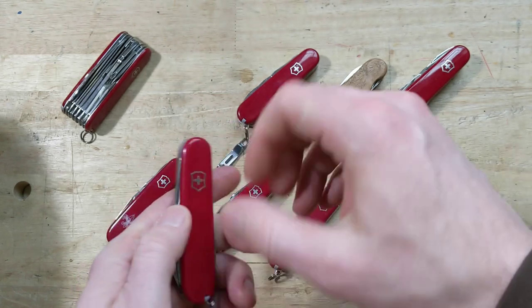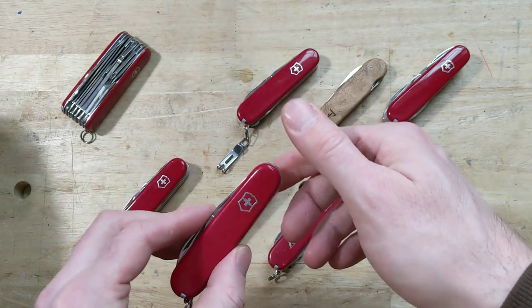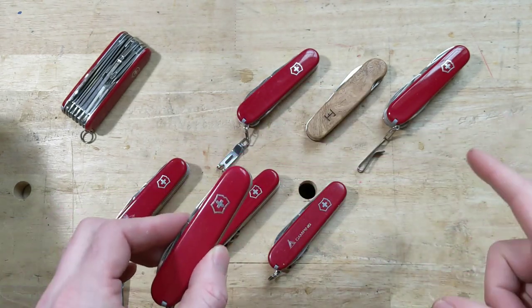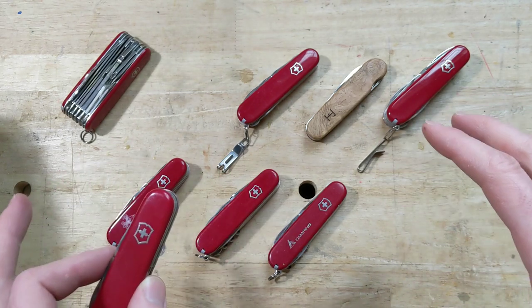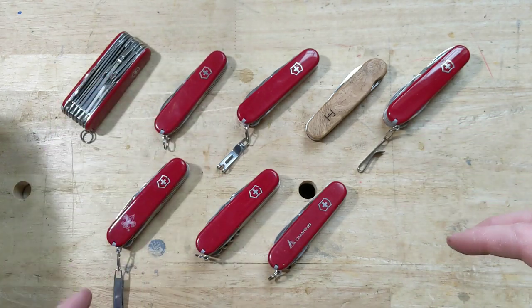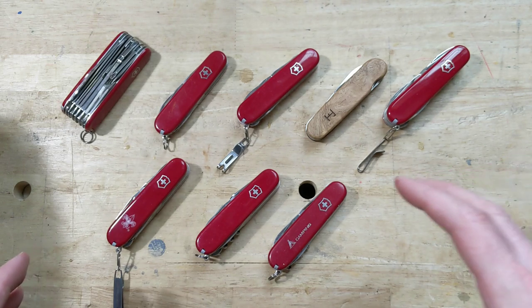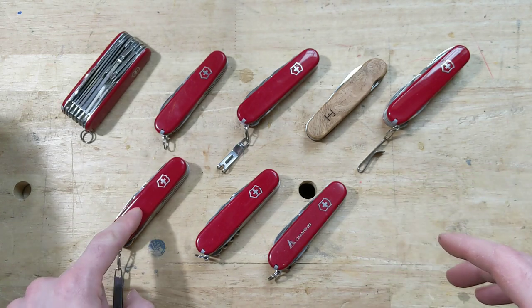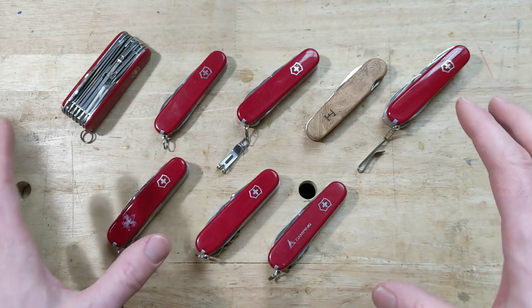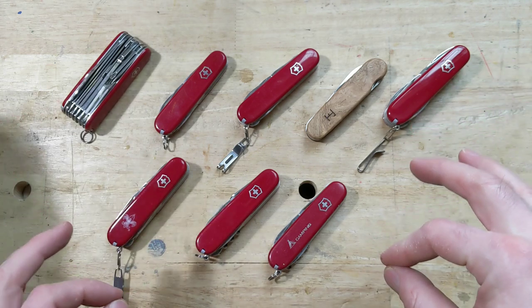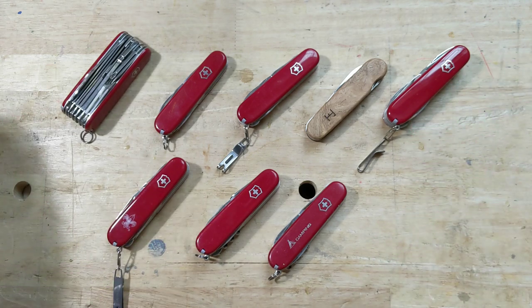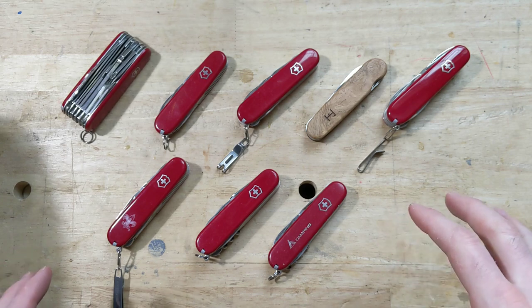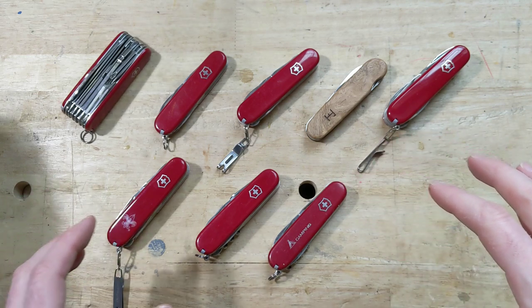So before you get going, you want to consider which knife you want to do this to. If you don't own a Swiss Army knife, then put some thought into this. If you do own a Swiss Army knife, any one of the 91 millimeter models, almost all of the 91 millimeter models have a small blade on them that you could do this with. But even then, you still probably want to think about it because some are better than others for this kind of situation.